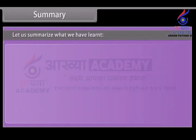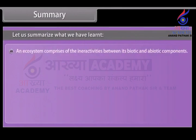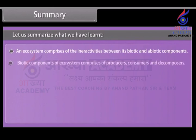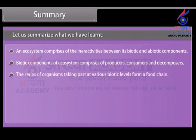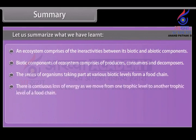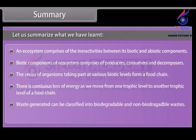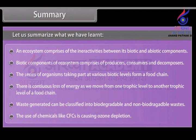Let us summarize what we have learnt. An ecosystem comprises the interactions between its biotic and abiotic components. Biotic components comprise producers, consumers and decomposers. The series of organisms at various biotic levels form a food chain, with continuous loss of energy as we move from one trophic level to another. Waste generated can be classified into biodegradable and non-biodegradable wastes. The use of chemicals like CFCs is causing ozone depletion.